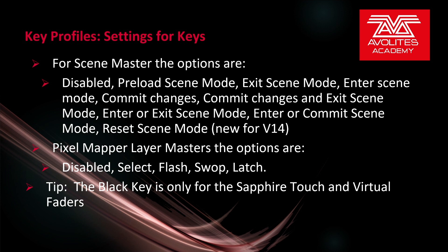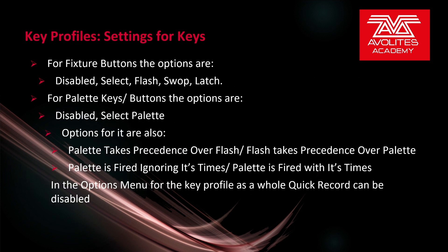If we're setting the key profile for a scene master, the options are: disabled, preload scene mode, exit scene mode, enter scene mode, commit changes, commit changes and exit scene mode, enter or exit scene mode, enter or commit scene mode, and reset scene mode. Reset scene mode is new for version 14 — it basically acts as clear for the scene master, clearing the contents of the scene you are about to go into. For a pixel mapper layer master, the options are: disabled, select, flash, swap, and latch. For fixture buttons: disabled, select, flash, swap, and latch. For a palette key or button: disabled, select palette — with options for palette takes precedence over flash, flash takes precedence over palette, the palette is fired ignoring its times, and the palette is fired with its times. Also, in the options menu for the key profile as a whole, quick record can be disabled.